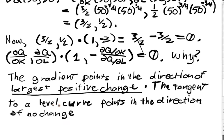But what does the tangent do? The tangent to a level curve points in the direction of no change. That is, it tells me how to locally stay on the level curve. And the level curve is defined by keeping the function constant.